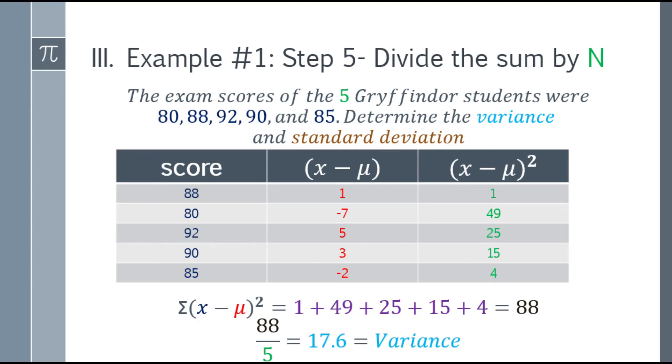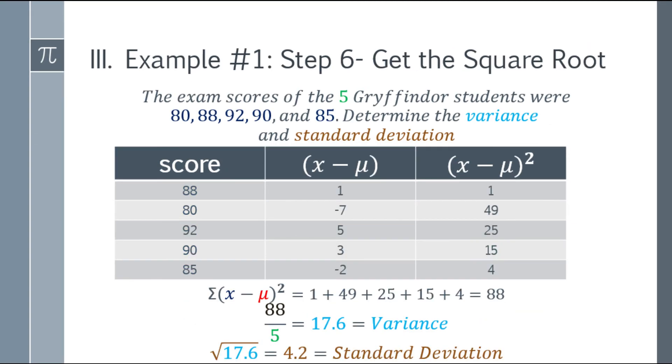Okay. Now, how do we compute the standard deviation? Just get the square root. Just get the square root of the variance, so the square root of 17.6 is 4.2.